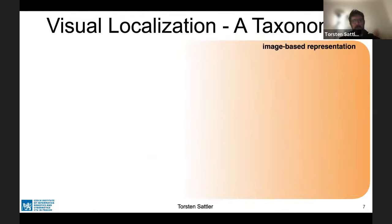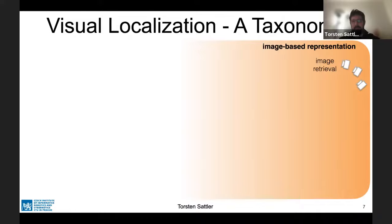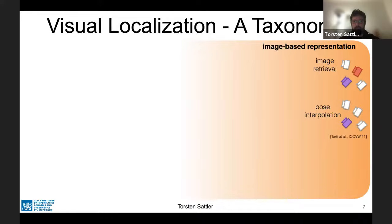Before discussing concrete algorithms, let's classify types of localization systems using a taxonomy based on scene representation. One category is image-based. A simple example is image retrieval: you have a set of database images with known poses, a new test image, and you find the most visually similar database image, approximating the test image's pose by the retrieved image's pose. For something more accurate, you can retrieve multiple relevant images and interpolate their poses based on visual similarity to the test image.